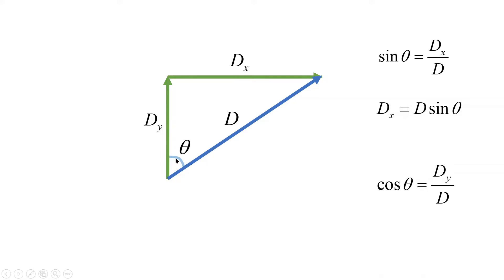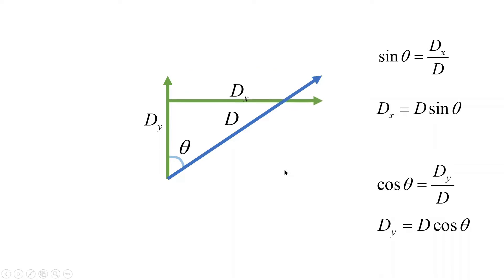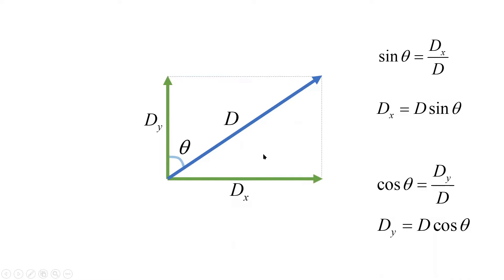Cosine theta is adjacent over hypotenuse, so it's DY over D. We get DY equal to D cosine theta — the component adjacent to angle theta uses D cosine theta. So here are the X and Y components of vector D when theta is with the Y component.